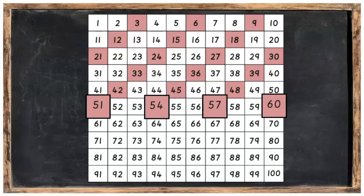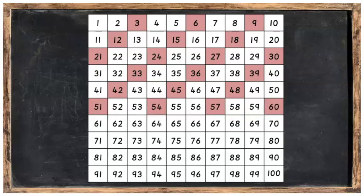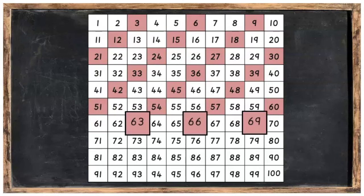After that, fifty-one, fifty-four, fifty-seven, sixty. Can you think of what's going to come next? We'll count on three from sixty. Sixty-one, sixty-two, sixty-three, sixty-six, sixty-nine.